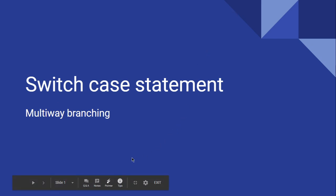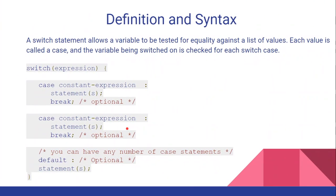Why do we say this is multi-way branching? We have learned in the previous classes about the if statement, else statement, and if-else ladder. When we have more and more options to check, that time we can go for the switch case statement, as there are more number of cases to execute. A switch statement allows a variable to be tested for equality against a list of values. Each value is called a case, and the variable being switched on is checked for each switch case.